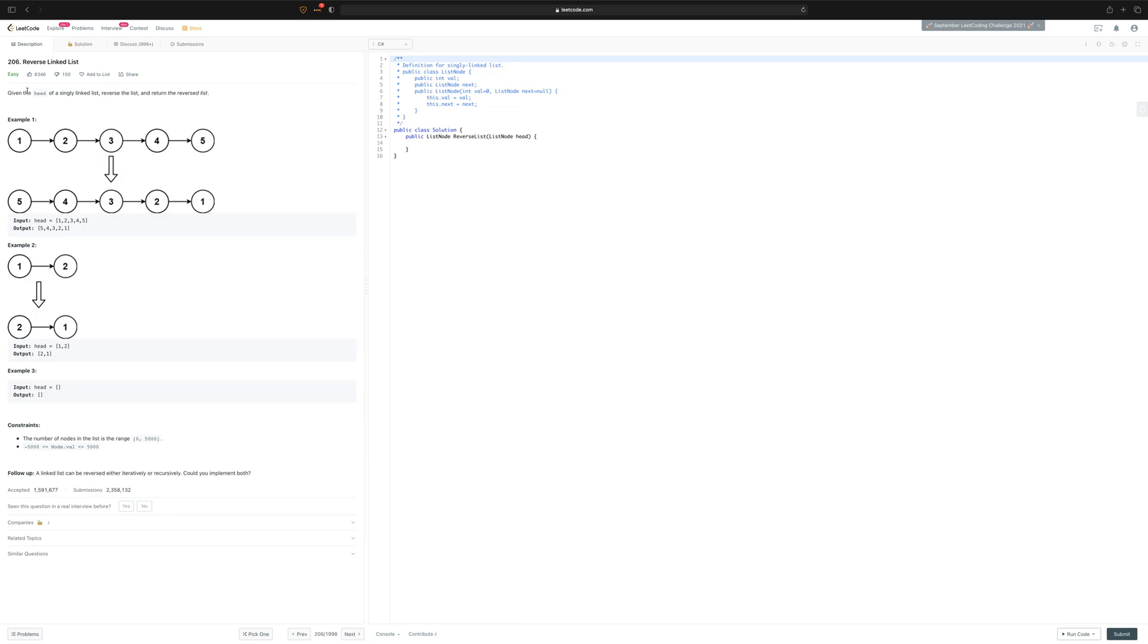If you look at example number 1, the list that is provided to us is in the sequence of 1, 2, 3, 4 and 5. And we need to return the reversed order which will start from 5, 4, 3, 2 and 1.